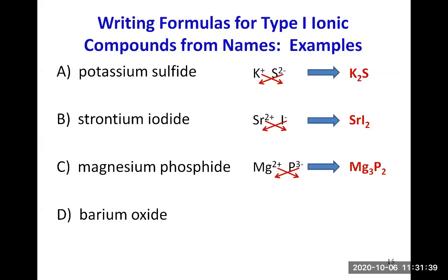We cannot simplify the ratio of 2 and 3. You need 3 magnesium with 2 positive charges each — that's 3 times 2, giving 6 positive charges in total. And you need 2 phosphorus ions each carrying 3 negative charges — that's 2 times 3, giving 6 negative charges in total. So they cancel out and Mg₃P₂ is a neutral formula.